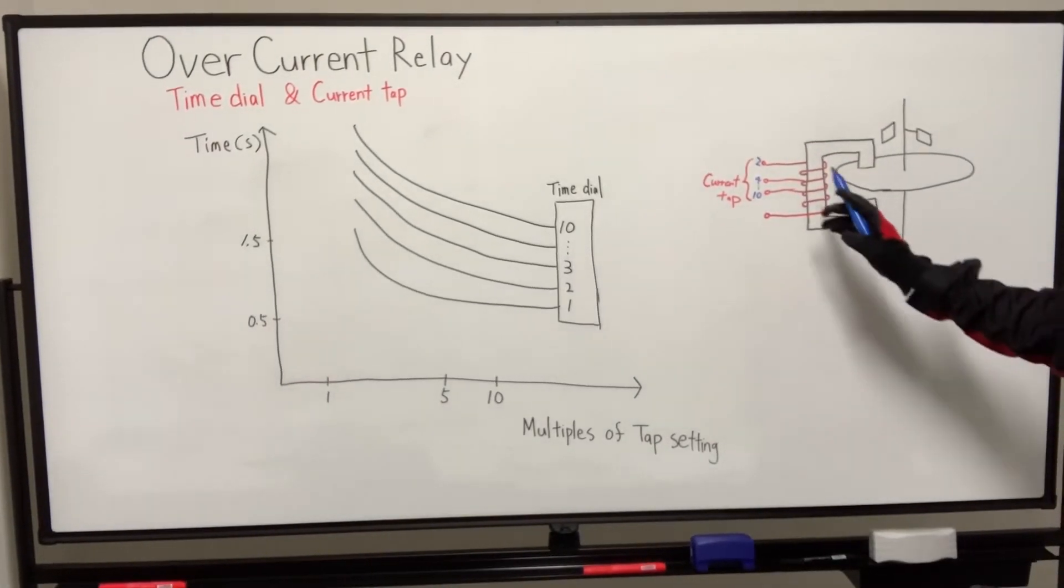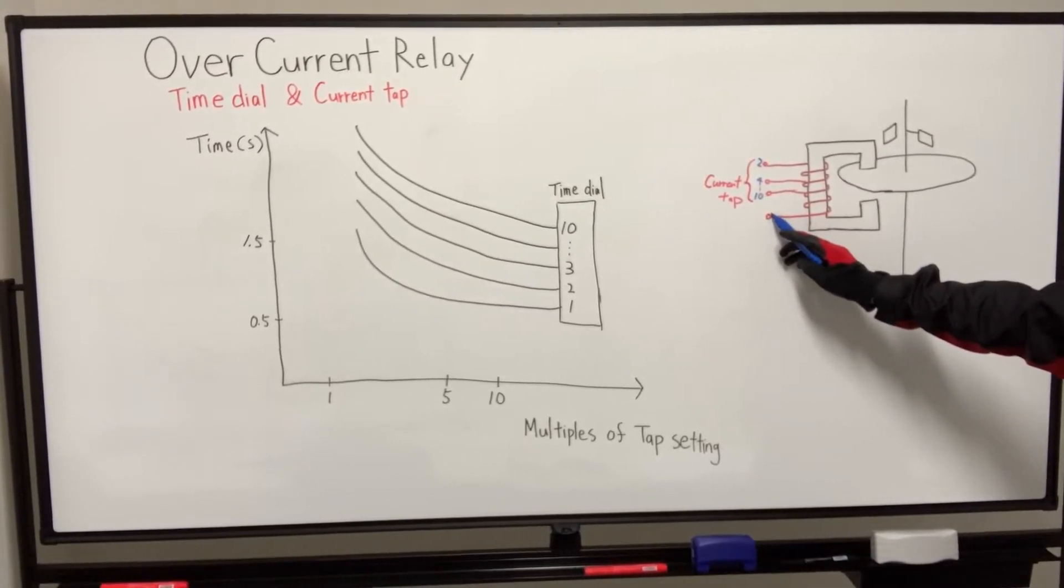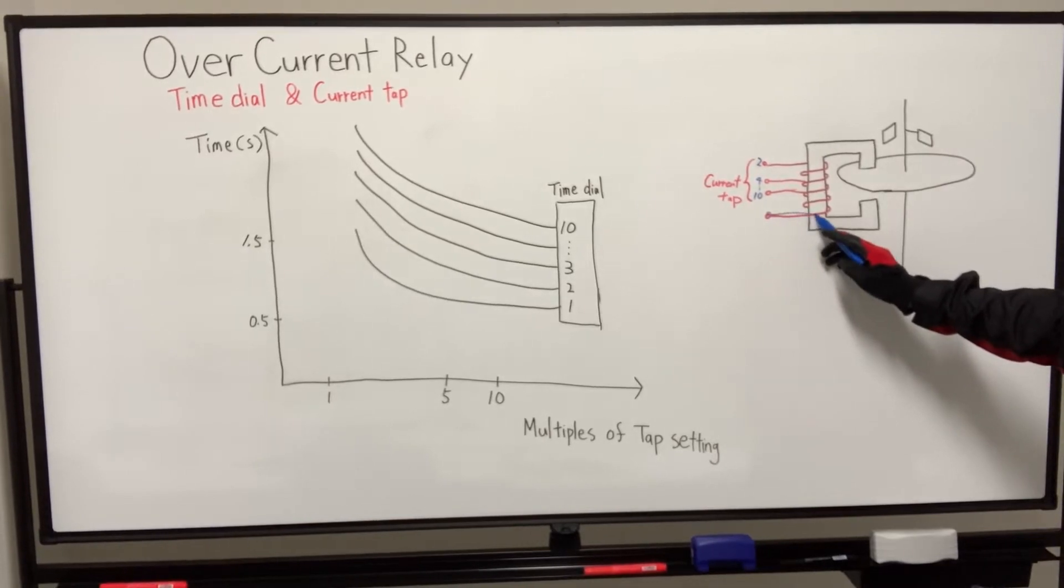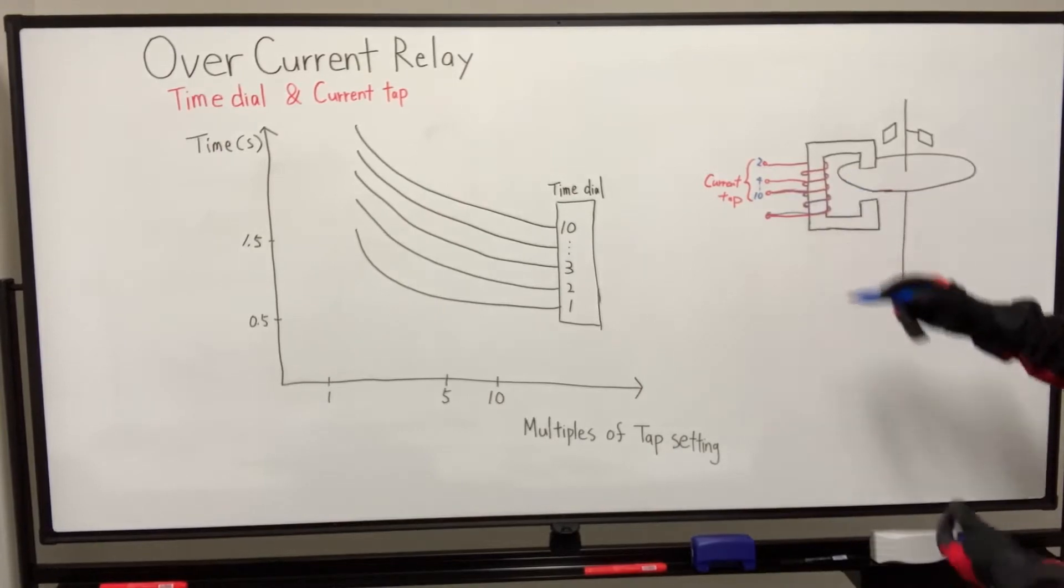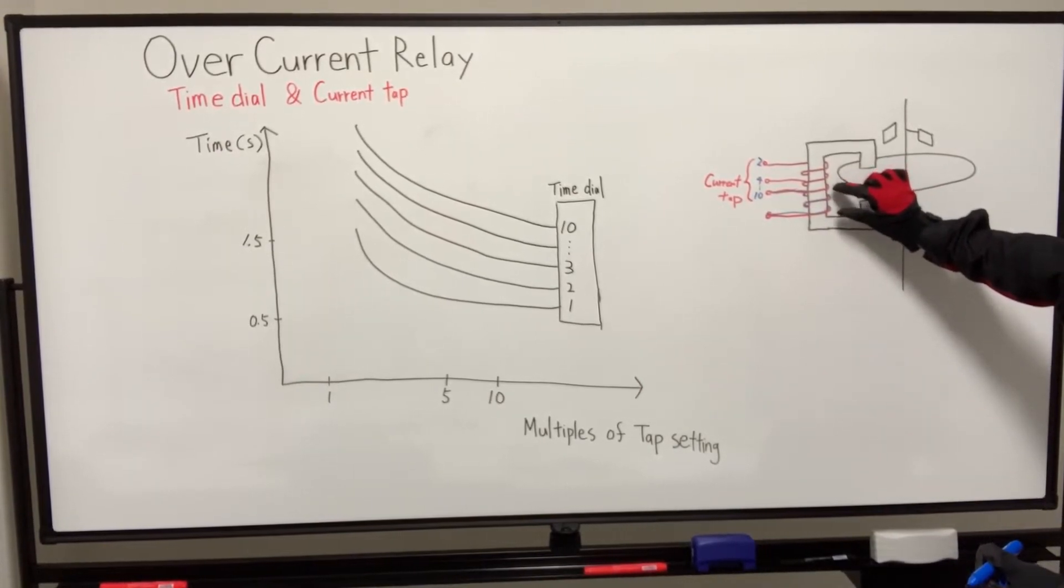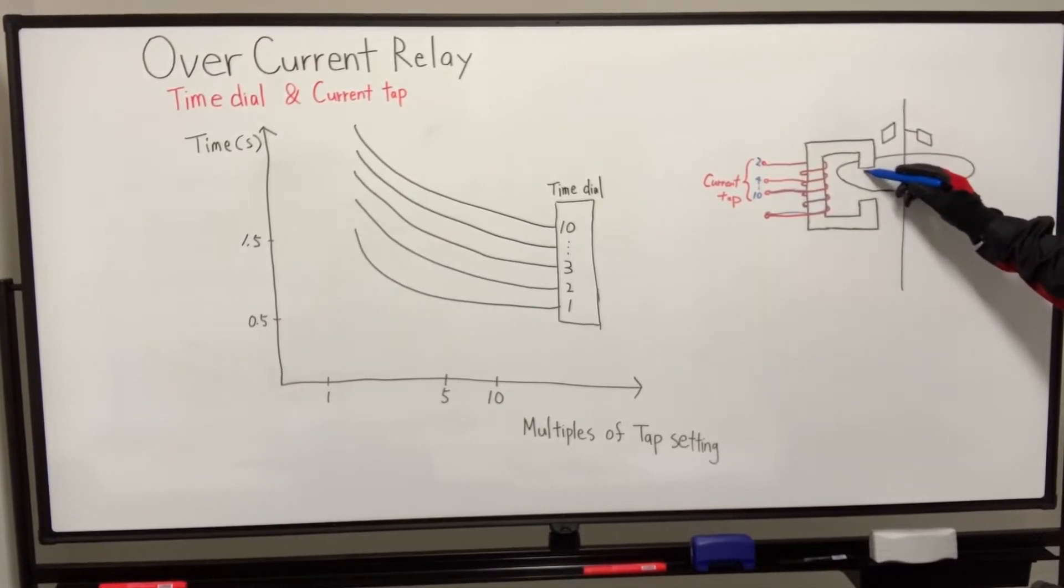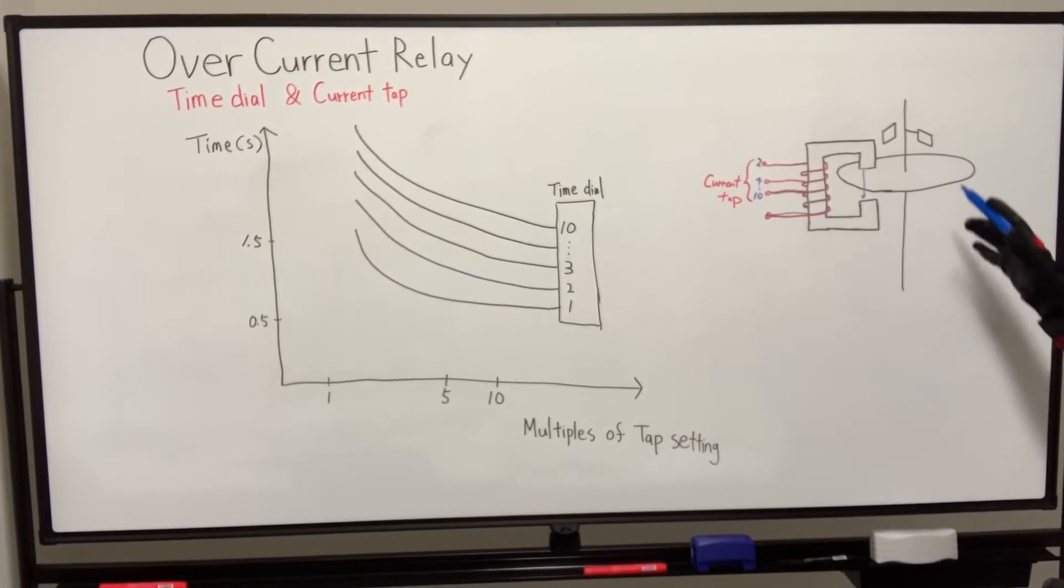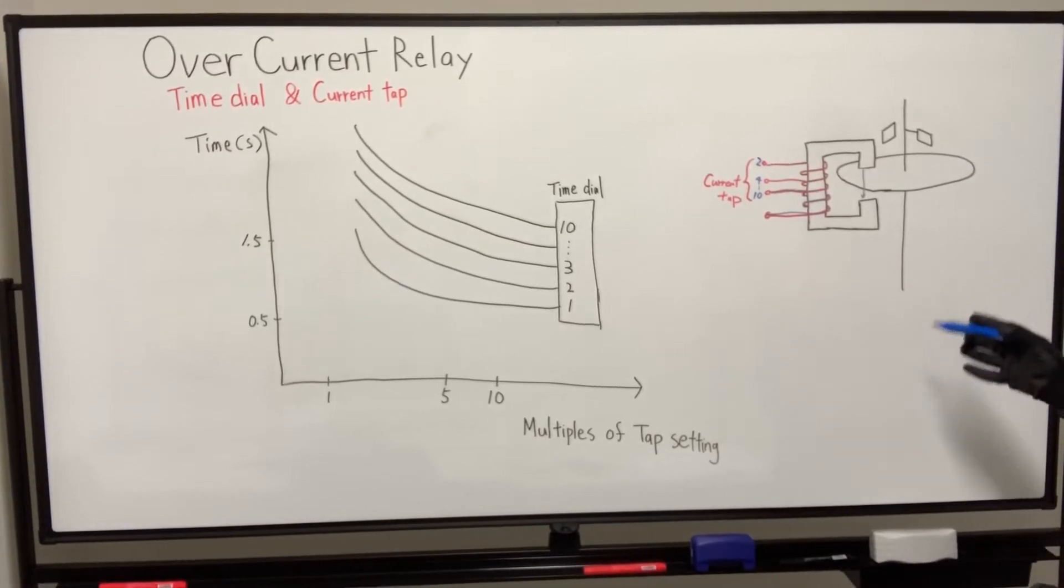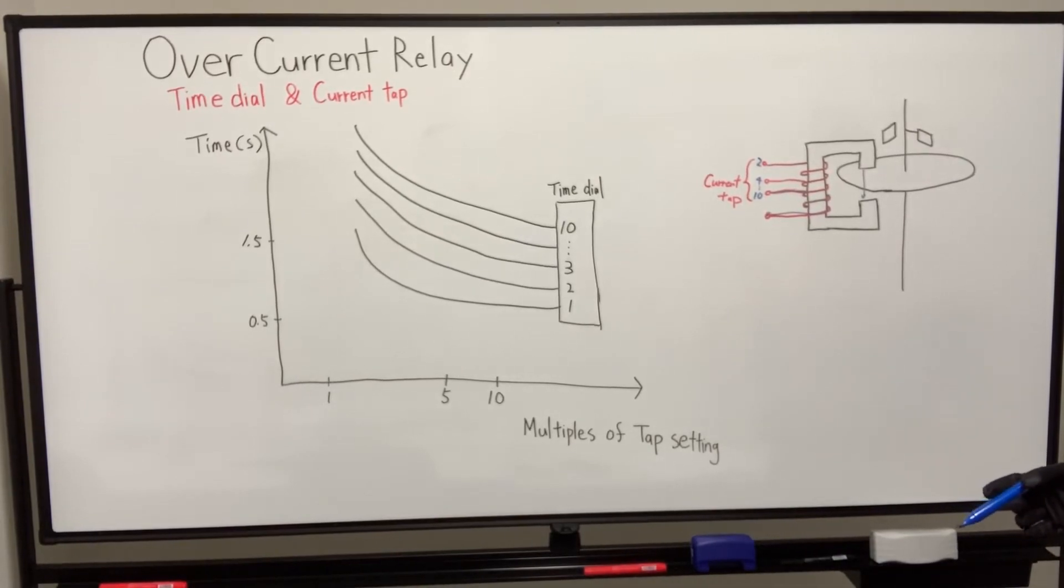On the other hand, if the tap setting is number 10, the distance between fixed and tap is very short. So the shorter coil creates a weaker magnetic field. The disk rotates feebly and takes more time for contact closure.